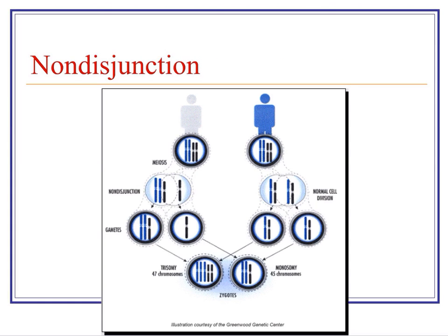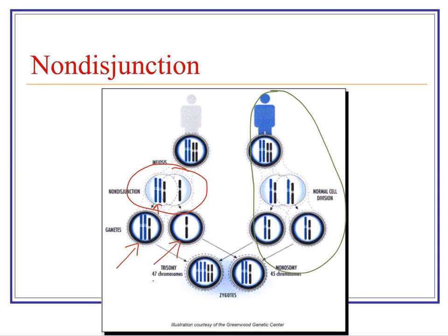This image shows what happens during nondisjunction — that error in meiosis. On the right-hand side is normal cell division, where chromosome pairs separate so that each gamete ends up with one copy of each chromosome. On the left, we can see the error: this blue chromosome pair didn't separate correctly during meiosis, so you could end up with an extra copy of a chromosome. The extra copy is known as trisomy, and you would end up with 47 chromosomes, like in Down syndrome.